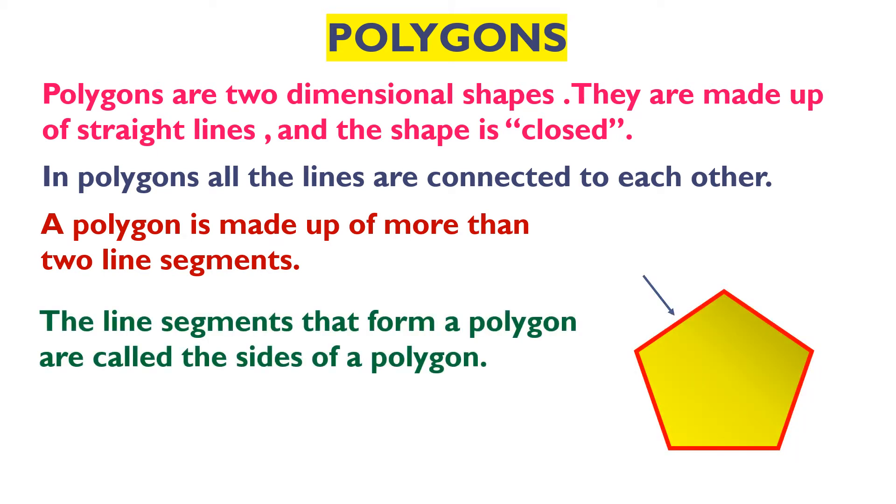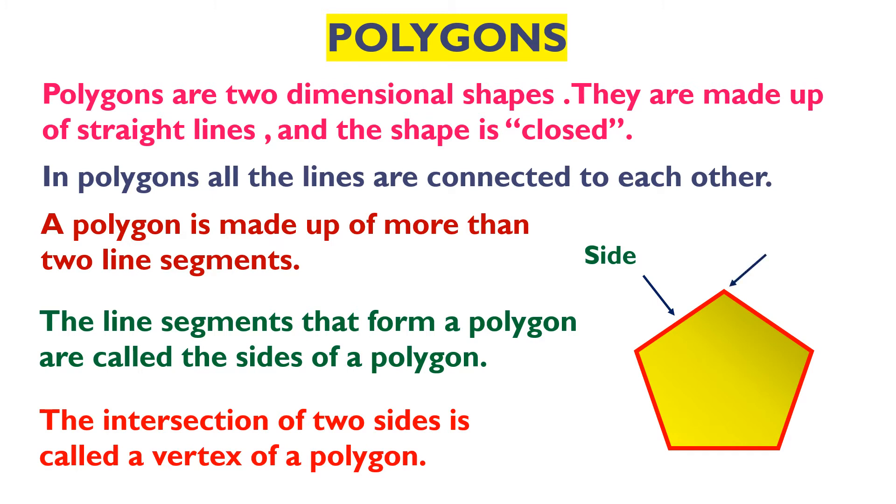The line segments that form a polygon are called the sides of the polygon and the intersection of two sides is called a vertex of a polygon where two lines meet. That point is known as the vertex of the polygon.